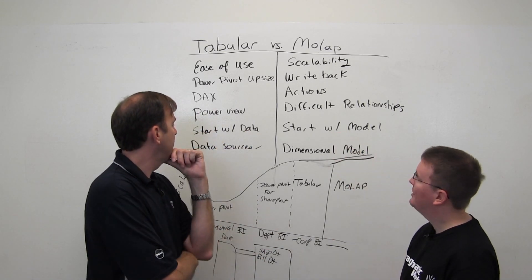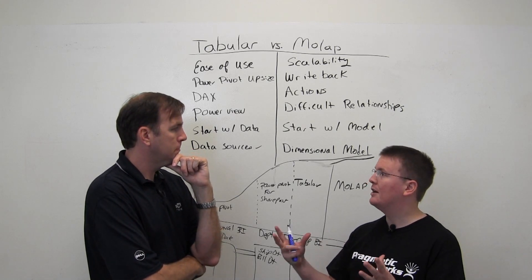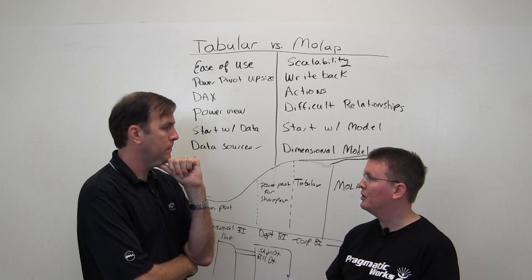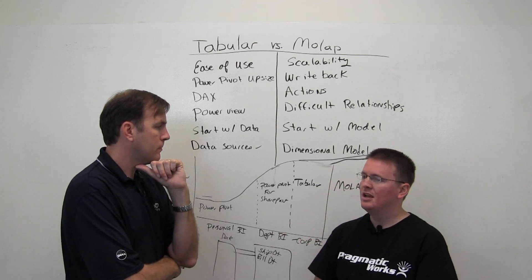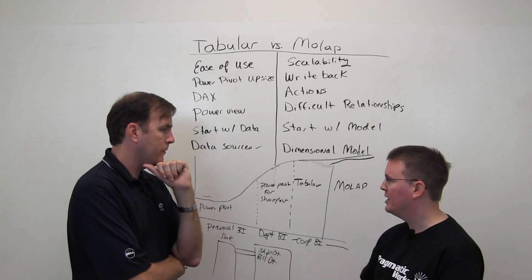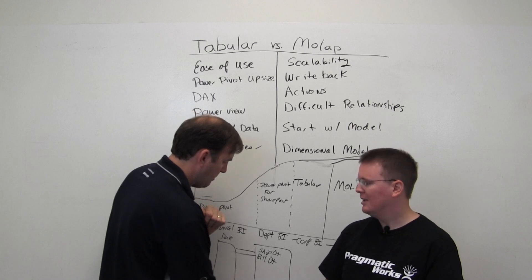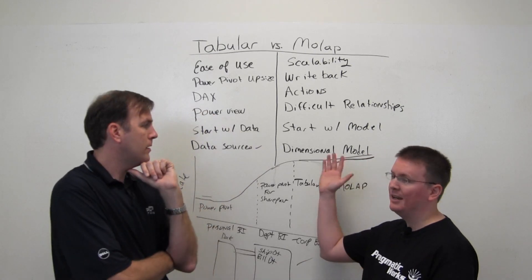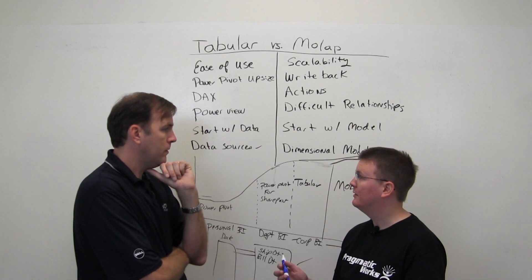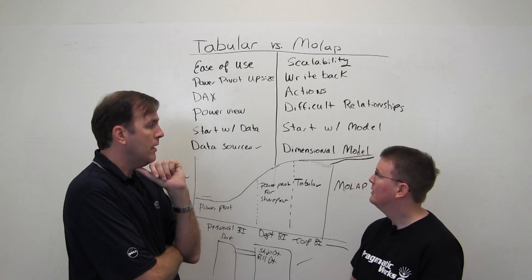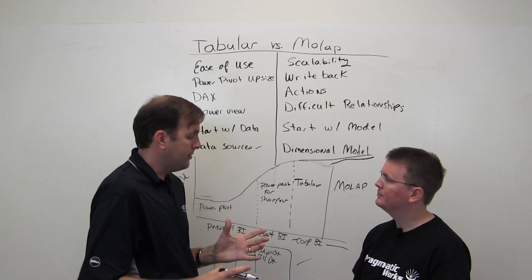And with analysis services, typically you're having to model out a data mart or data warehouse first before you're even ready to get into a multidimensional environment. So you model out your traditional, kind of like you've drawn here, my date dimension, my fact table, star schema kind of thing. A traditional star schema is able to handle analysis services multidimensional very easily.